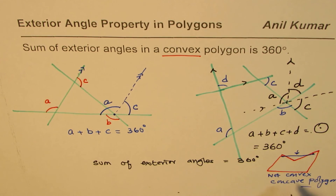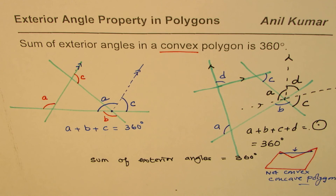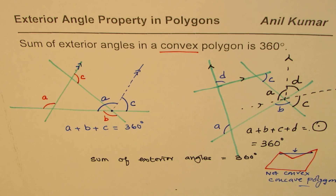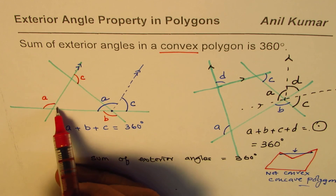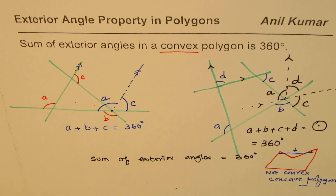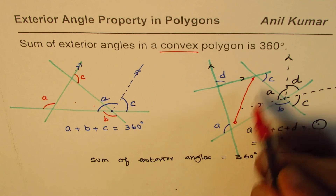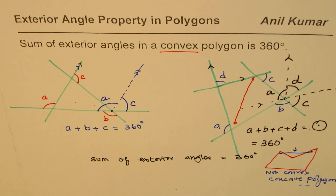In concave polygons, this property does not hold — that's why the word convex is important. In a convex polygon, you can take any two points inside and the line joining them will be entirely inside the polygon. I hope the concept is clear. I'm Anil Kumar — please share and subscribe. Thank you and all the best.